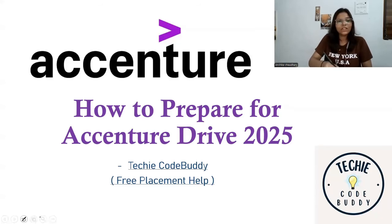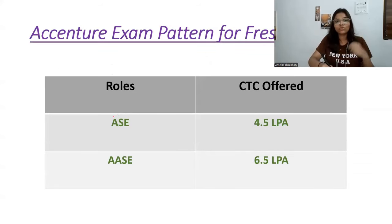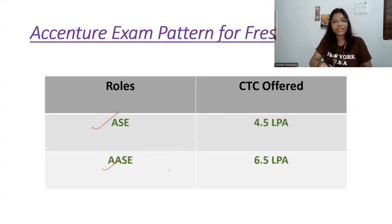First, let's see what roles Hexaware will hire for. There are basically two roles: first is ASE, that means Associate Software Engineer, and the CTC offered will be 4.5 LPA. The second is Advanced Associate Software Engineer with 6.5 LPA.